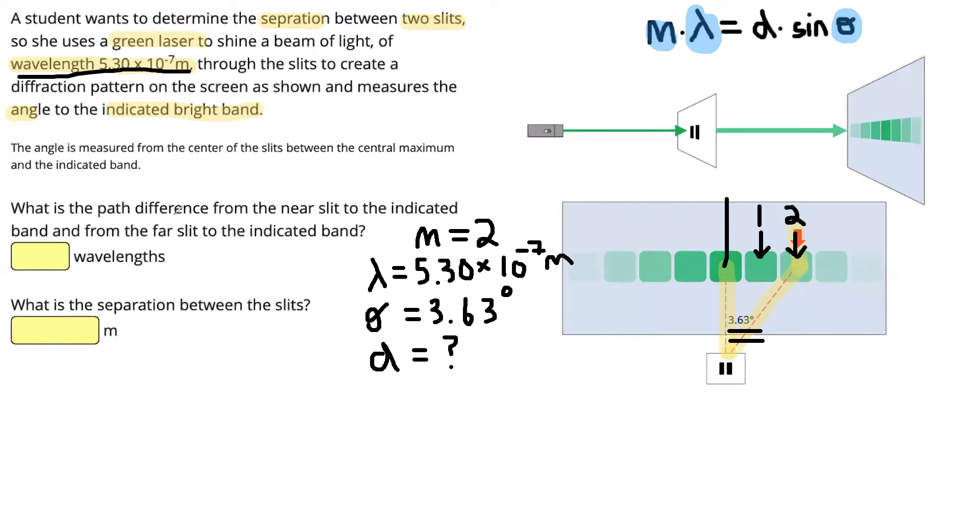Okay, so now on to solving the problem. It's asked us what's the path difference from the near slit to the indicated band and from the far slit to the indicated band. That's asking us for our M value, which is 2. We know that there are two whole wavelengths of path difference between the waves coming from the two bands in order for them to be that second bright spot. So that's going to be 2 there.